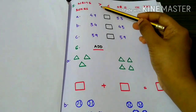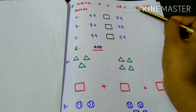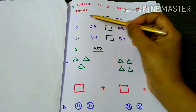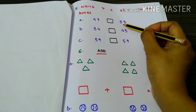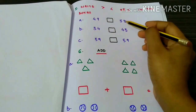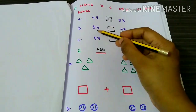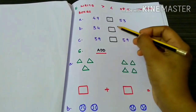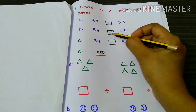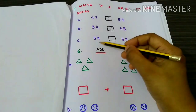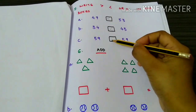Write greater than, less than, or equal to in the boxes. 49 is less than 53. 34 is less than 43. 59 is equal to 59.